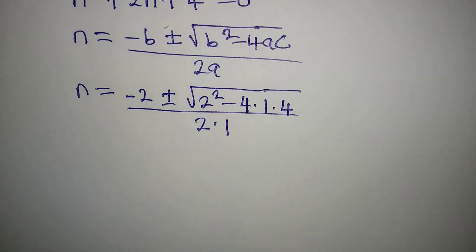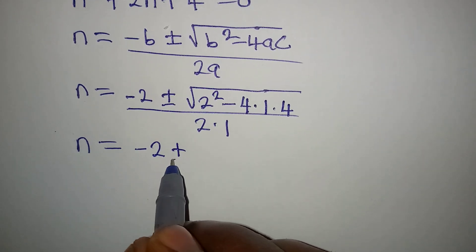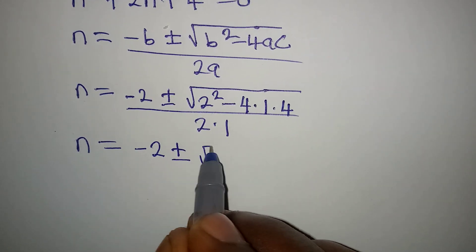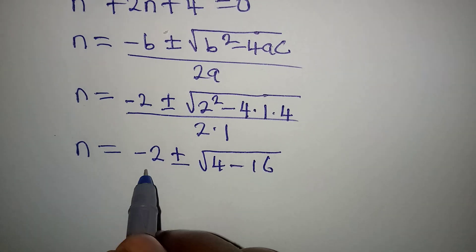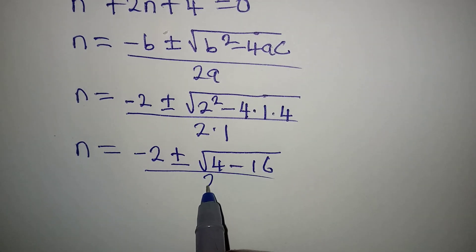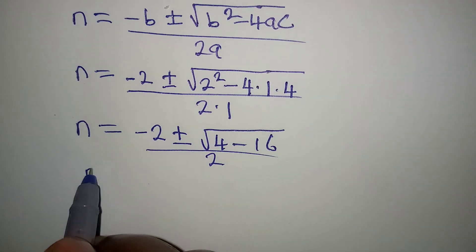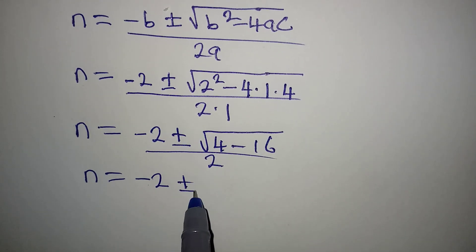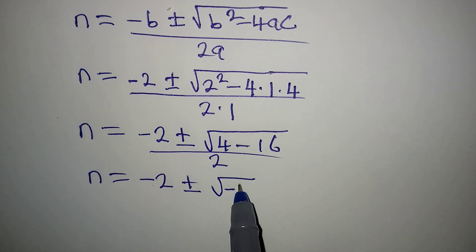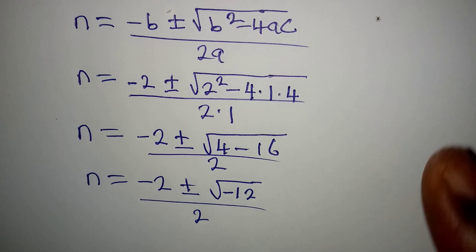To continue, n will be minus 2 plus or minus the square root of 4 minus 16, all over 2. To continue further, n will be minus 2 plus or minus square root of negative 12, all over 2.